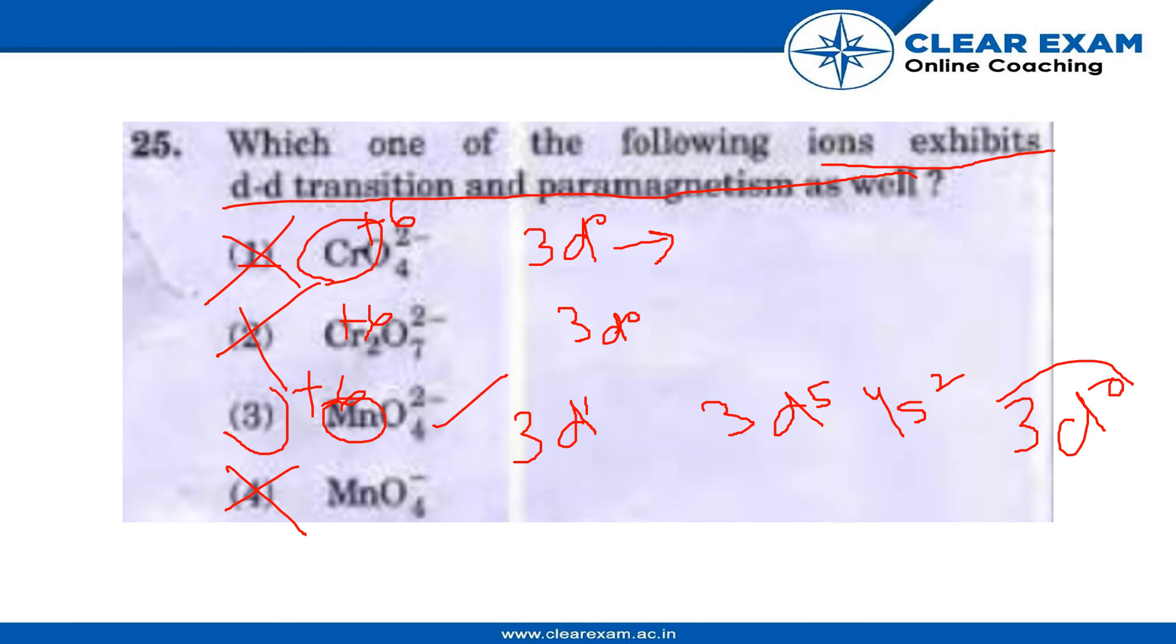So, only the third option, MnO4 2-, is capable of doing a d-d transition. Thank you.